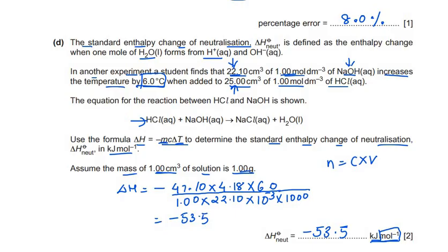To summarize the calculation: mass of total solution is the sum of both volumes (22.10 + 25.00 = 47.10 g), specific heat capacity c = 4.18, temperature change ΔT = 6.0°C. Dividing the energy by moles of NaOH (concentration × volume) and then by 1000 to convert to kilojoules gives −53.5 kJ/mol.